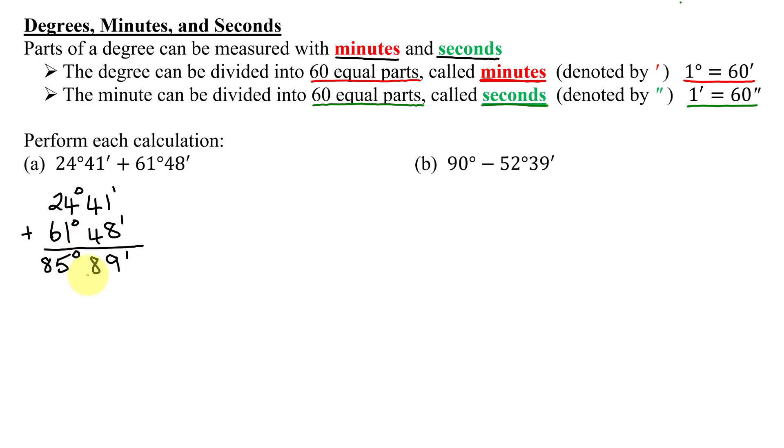But we cannot leave 89 minutes in the answer. You cannot have the number of minutes being 60 or above. So what I'm going to have to do is subtract 60 minutes from my 89 minutes. So I'm going to have 85 degrees plus 60 minutes, and what's 89 minus 60?